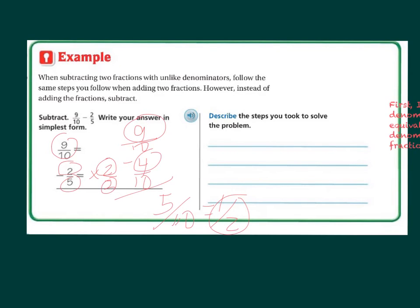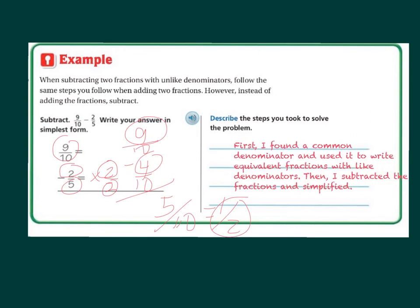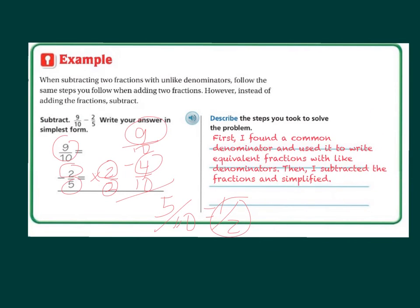So now it asks to describe the steps that I took to solve the problem. Well, first I found a common denominator, which was 10, and I used it to write an equivalent fraction with like denominators. And then I subtracted the fractions and simplified.